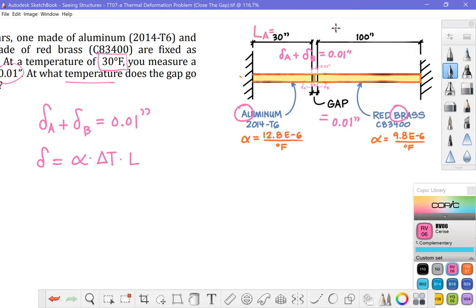So the length of the aluminum equals 30 inches, the length of the brass is equal to 100 inches. Let's flesh out this equation. So αA × LA and the same amount of ΔT is going to apply to both of these terms so I'll just go ahead and pull that out as I set up my equation